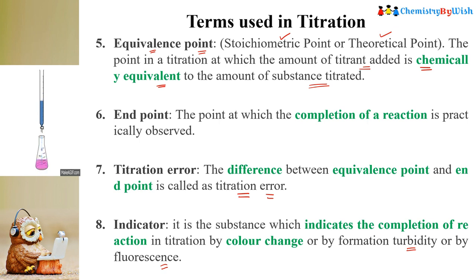So if you are doing a normal acid-base titration, you will know that the reaction is completed by color change. If you are doing a precipitation titration, you will know the reaction is completed by formation of turbidity. And by fluorescence we can also know. The substance used to indicate the completion of the reaction by color change is called an indicator.